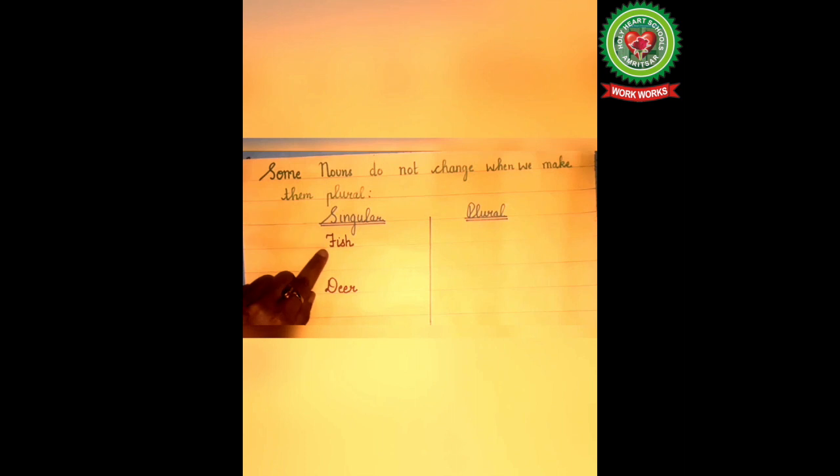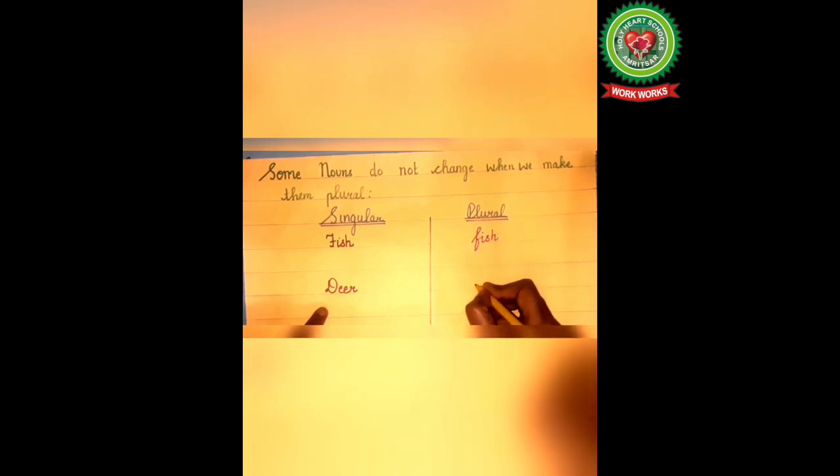First, fish here is the singular noun. The plural noun of fish is also fish. Next example, deer. Deer is a singular noun here. The plural noun of deer will be deer only.